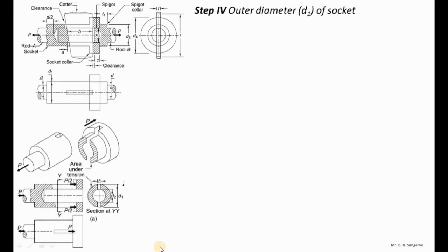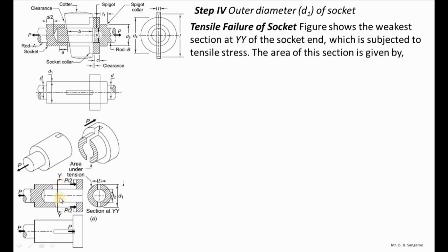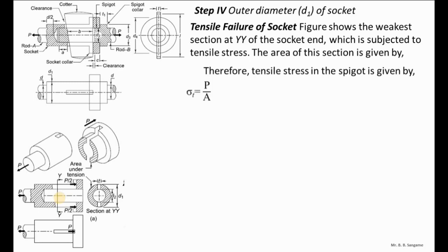Next, we calculate the outer diameter d1 of the socket. The spigot outer diameter d2 = 40 mm is also the inner diameter of the socket. Considering tensile failure of the socket at section YY, the induced stress sigma_T = P/A. The net cross-sectional area is A = (π/4)(d1² − d2²) − (d1 − d2)×t.